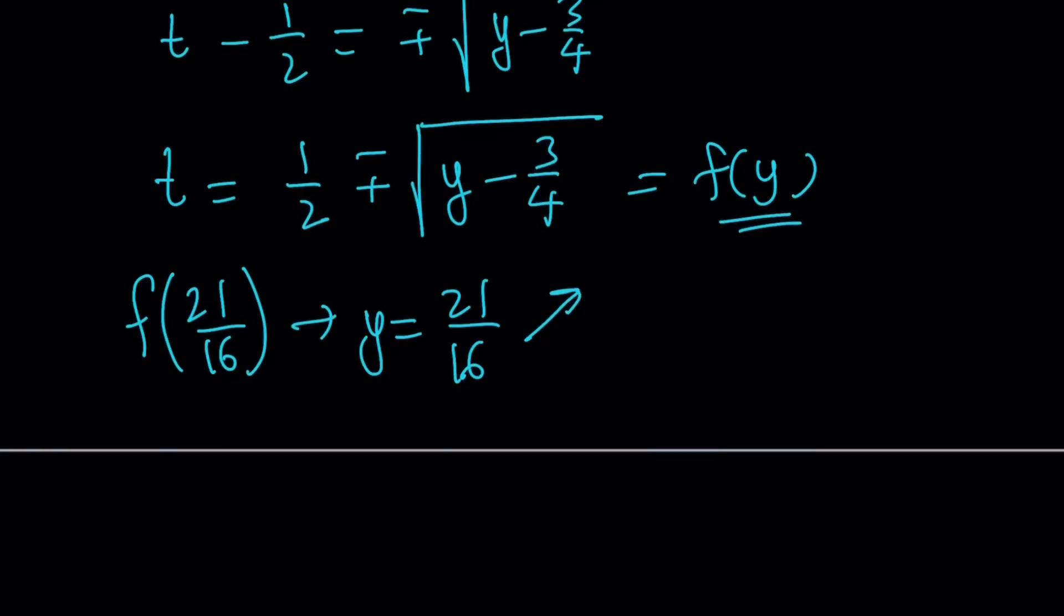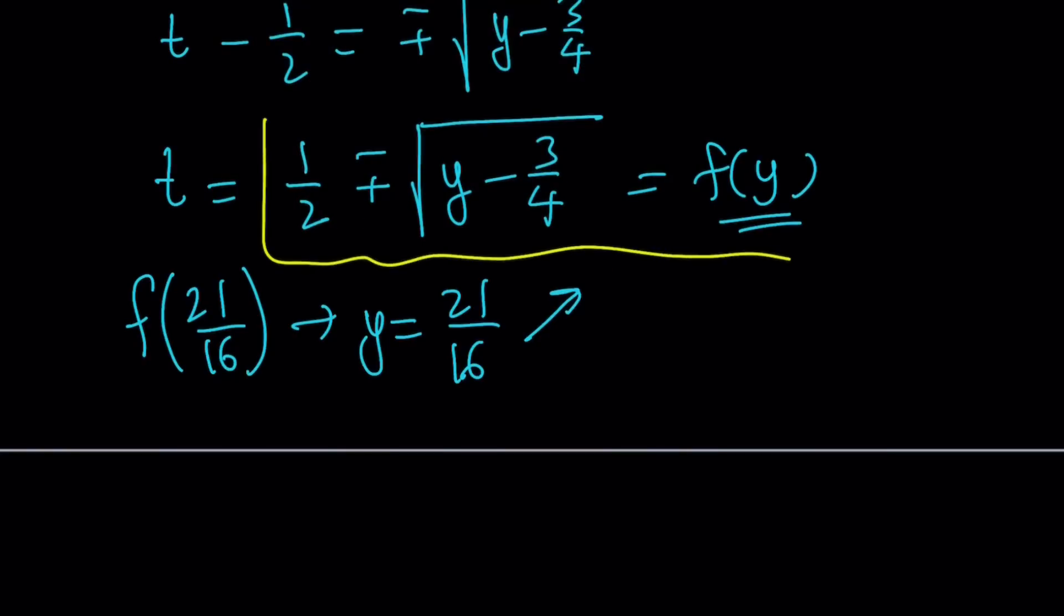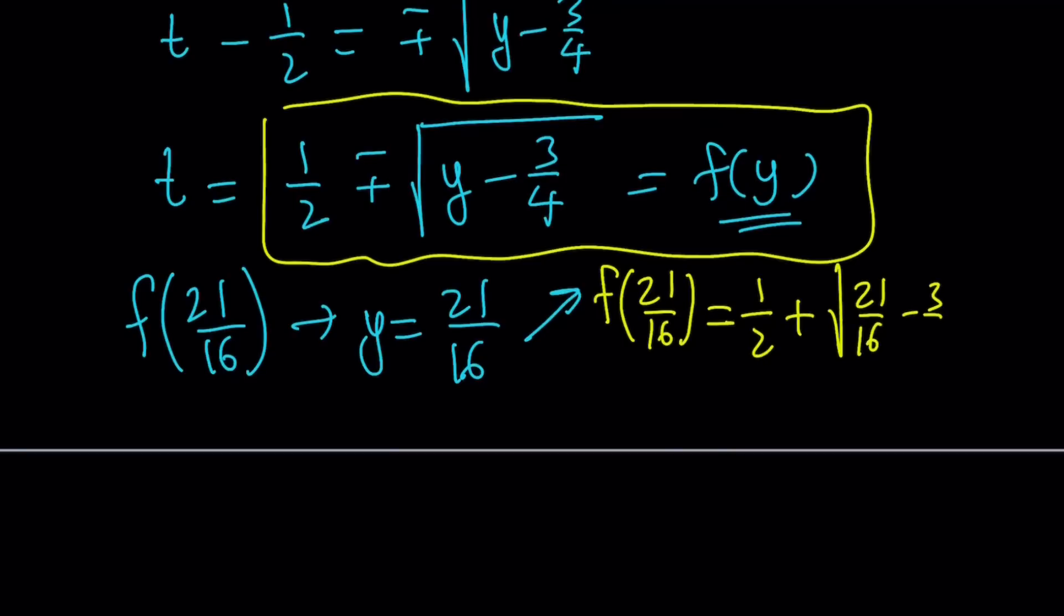So for example, if I go ahead and replace y with 21 over 16, let's go ahead and use the first one first. So f of 21 over 16 is going to be 1 half plus the square root of 21 over 16 minus 3 fourths. This is the positive version or the plus version.